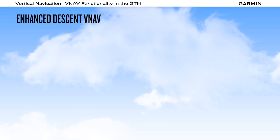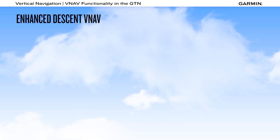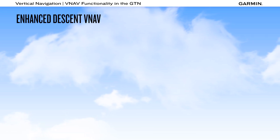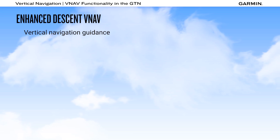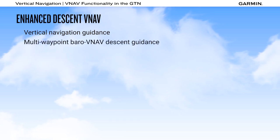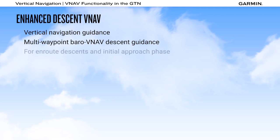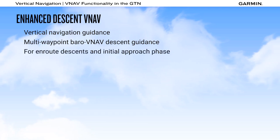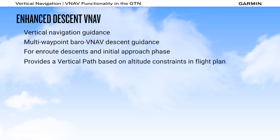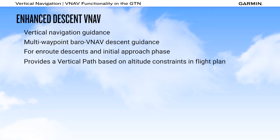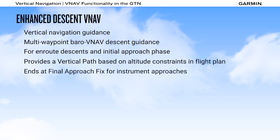Pilots have been taking advantage of the precise lateral navigation provided by Garmin devices for a long time, and with your GTN, you have the same level of precision for vertical navigation. The GTN can provide multi-waypoint baro VNAV descent guidance for both the en-route phase as well as for initial approach guidance. This guidance, provided in the form of a vertical path, is based on altitude constraints associated with lateral waypoints in the active flight plan. For instrument approaches, this guidance ends at the final approach fix.